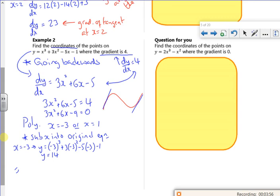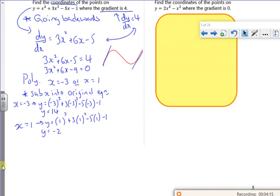And then if I use 1, I'm checking my times here. 1 cubed, 3, yeah. 1 squared minus 5x or 1 minus squared. 1 is minus 2. So my coordinates are minus 3, 14, and 1 minus 2.